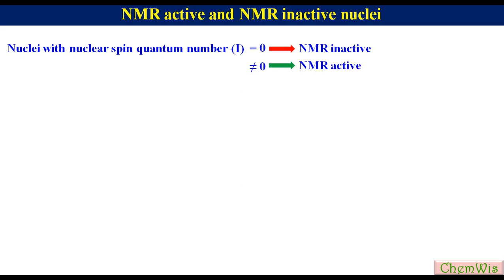Now let's learn how to identify which nucleus has 0 I value and which has non-zero I value. An element can be represented where X is the atomic symbol like H for hydrogen, He for helium, C for carbon, N for nitrogen, etc.